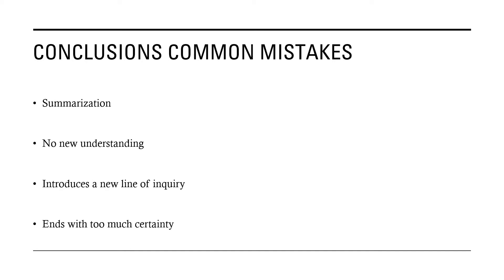So first, let's go through some common mistakes that I see in conclusions. Some of you may have even noticed that I put some notation on your papers, letting you know that these are things I'd like you to work on. One of the biggest things is summarization — it's like saying, this is what I talked about, I talked about A, B, and C, and now my paper has ended. Goodbye.